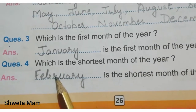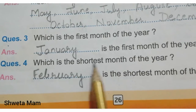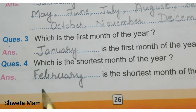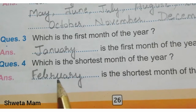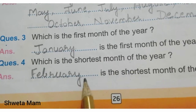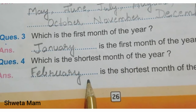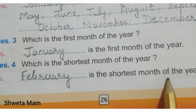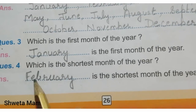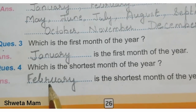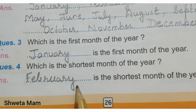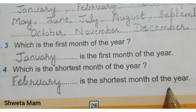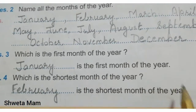Question number 4: Which is the shortest month of the year? February, F-E-B-R-U-A-R-Y. February is the shortest month of the year.